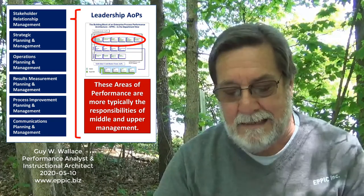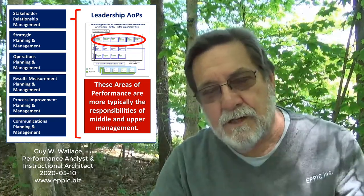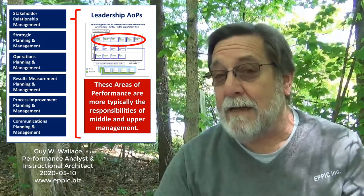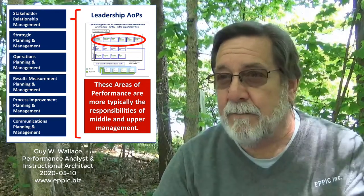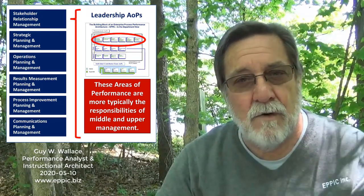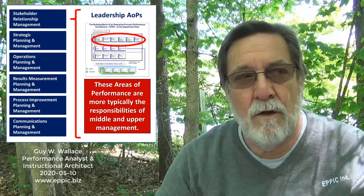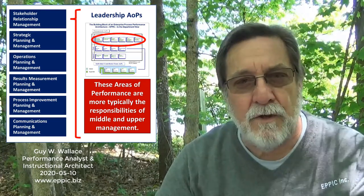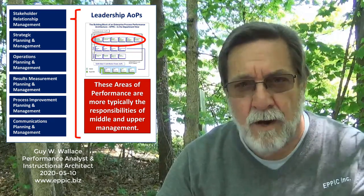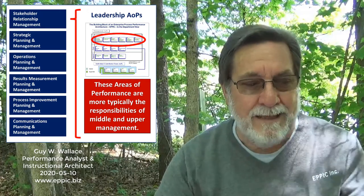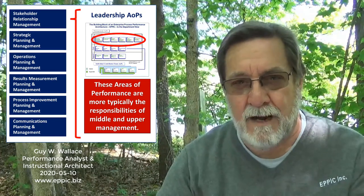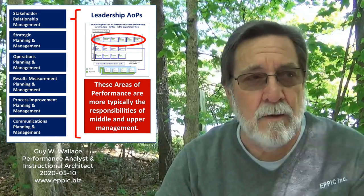Understanding stakeholder requirements leads naturally into the next box: strategic planning and management. When doing strategic planning, we need to consider what stakeholders think about our current performance, what their future needs are, and how we're going to meet those needs. For example, if regulators are a key stakeholder, we need to be strategically planning to meet their future requirements rather than being surprised and having to scramble at the last minute to conform.